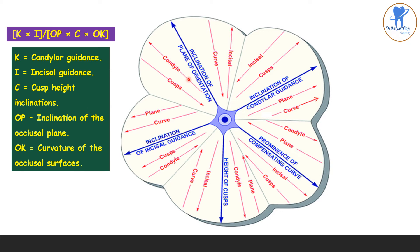If the condylar cadence inclination increases, then the incisal cadence decreases, and the other factors increase — that is cusp height, plane of orientation, and compensating curve. If the compensating curve increases, then the condylar cadence and the incisal cadence increase, and the cusp height and the plane of orientation decrease.